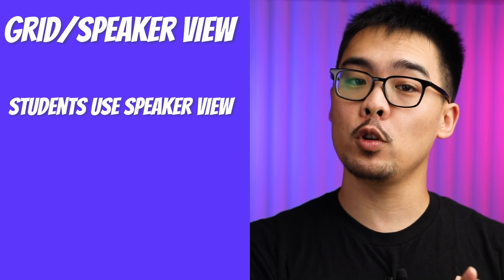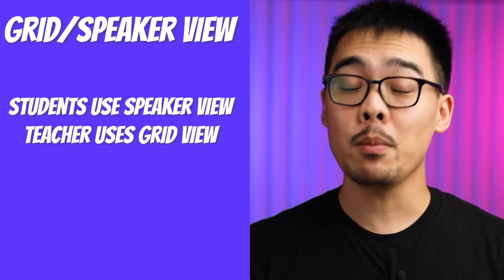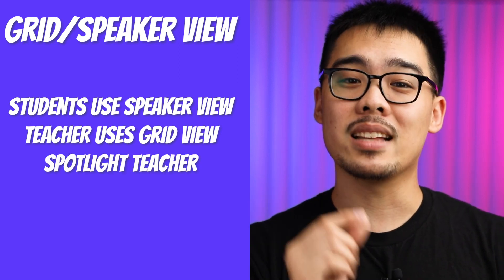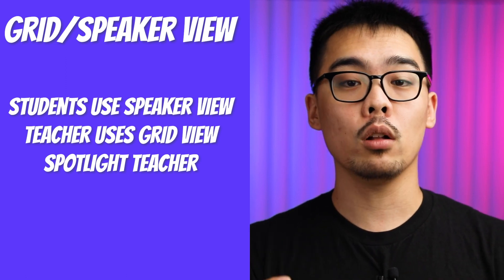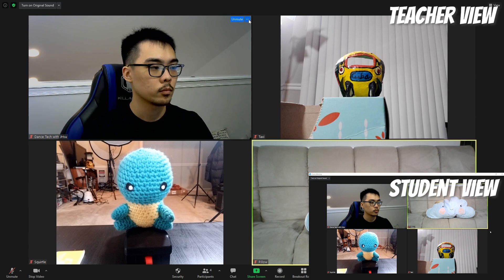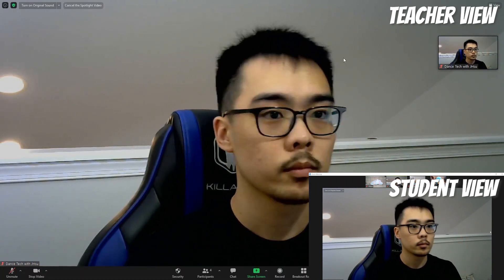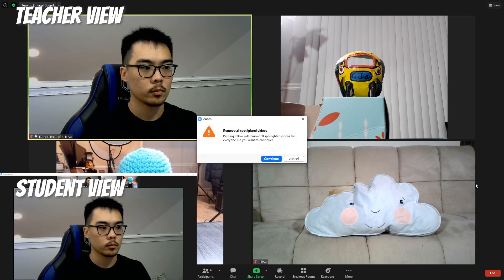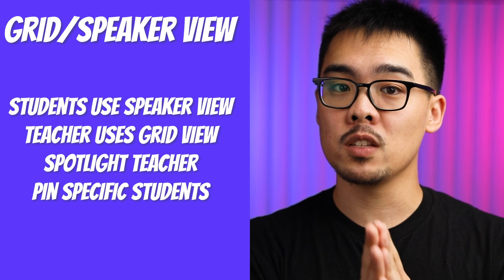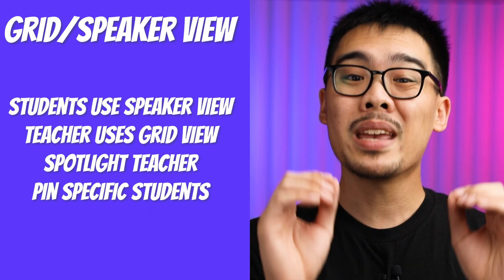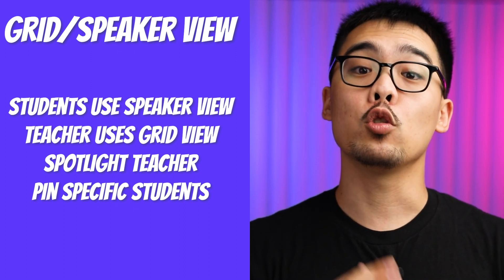Grid view versus speaker view. When you're teaching, I would recommend having all of your students watch in speaker view, while you teach in grid view. That way, you can see everyone at the same time, but they can focus on you. If you spotlight yourself, that will lock you in as the main speaker for everyone, so even if other students talk during the call, you will remain the main speaker. To do this, just click on the top right of your box and select the spotlight option. This will automatically put everyone in speaker view, although if they want to, they can always switch back to grid view on their own. If you want to focus on a student, you can always pin them on your screen. Pinning only affects your screen and will put it into speaker view, highlighting whoever you pinned. Just click on the top right corner of that student's video and select the pin option. When you spotlight a person's video, that will highlight them on everyone's screen. When you pin a video, it will only highlight that person on your screen.